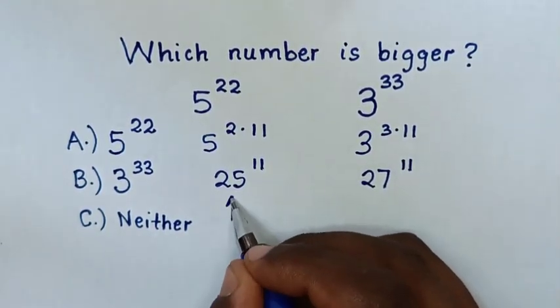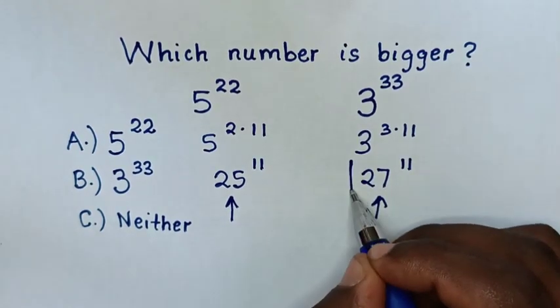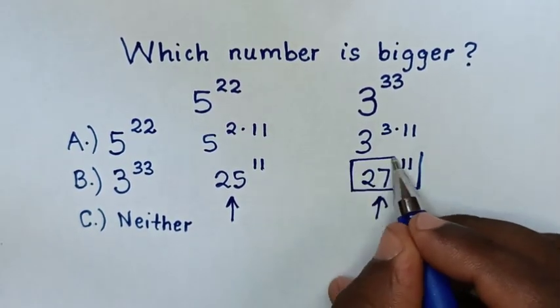Now, we can compare between these two numbers as they have the same base. 27 to the power of 11 is bigger.